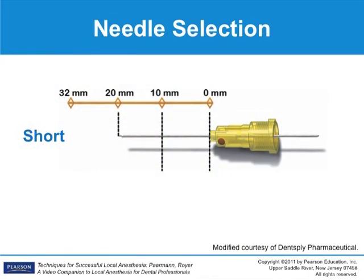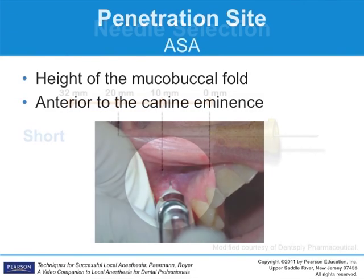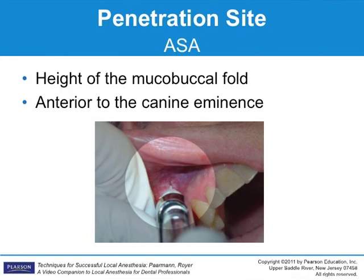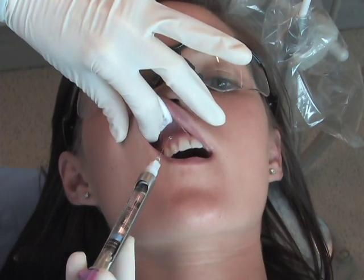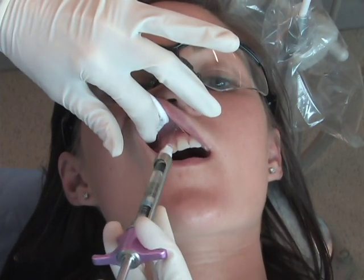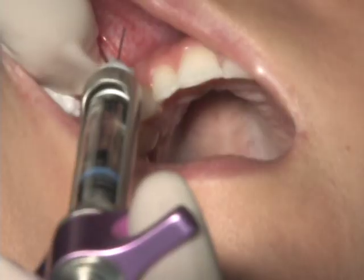A 25, 27, or 30 gauge short needle works well for this injection. The penetration site is at the height of the mucobuccal fold at the canine fossa. To gain access to the site of penetration, gently retract the tissue, pulling the tissues taut while lifting the tissues away from the maxilla. Be sure that the patient's head is tilted up and back in order to enable you to have good vision and easy access.